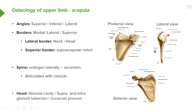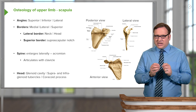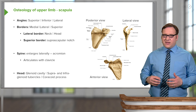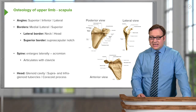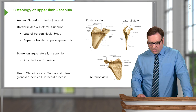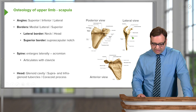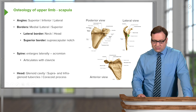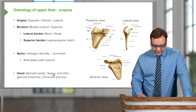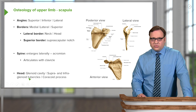Looking at the head in more detail, we have the glenoid cavity. On the lateral view we can also see a supraglenoid and an infraglenoid tubercle — small bony elevations on the superior and inferior aspects of the glenoid cavity. These are important for muscle attachments: the long head of biceps attaches to the supraglenoid tubercle, and triceps attaches to the infraglenoid tubercle.